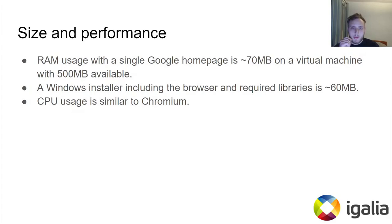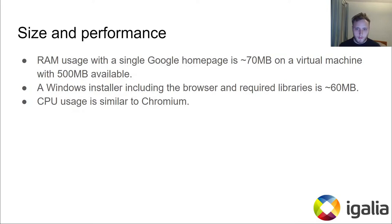In terms of performance, CEF is similar to a single-page Chromium browser, though RAM usage seems to be a little bit lower. We tested our application on a virtual machine with 500 megabytes of RAM, and a browser with just the Google homepage opened used about 70 megabytes of RAM. The Windows installer, as well as the unpacked browser, used just about 60 megabytes of disk space. CPU usage is similar to Chromium, though we didn't do any precise measurements and our virtual machines had a good amount of CPU allocated, so we didn't have any issues there.